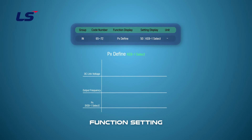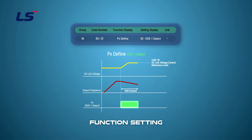The KEB function can also be operated using an input terminal block. When the terminal block KEB1 select function is enabled (on), the inverter output frequency is controlled to maintain the DC voltage at the level set in CON 78. If the terminal block input is disabled (off) during energy buffering operation, normal operation returns to the command frequency. Since the start and end points of energy buffering operation are set with the terminal block input, even if the input power is cut off, if the KEB1 select terminal is off, the energy buffering operation is not performed.